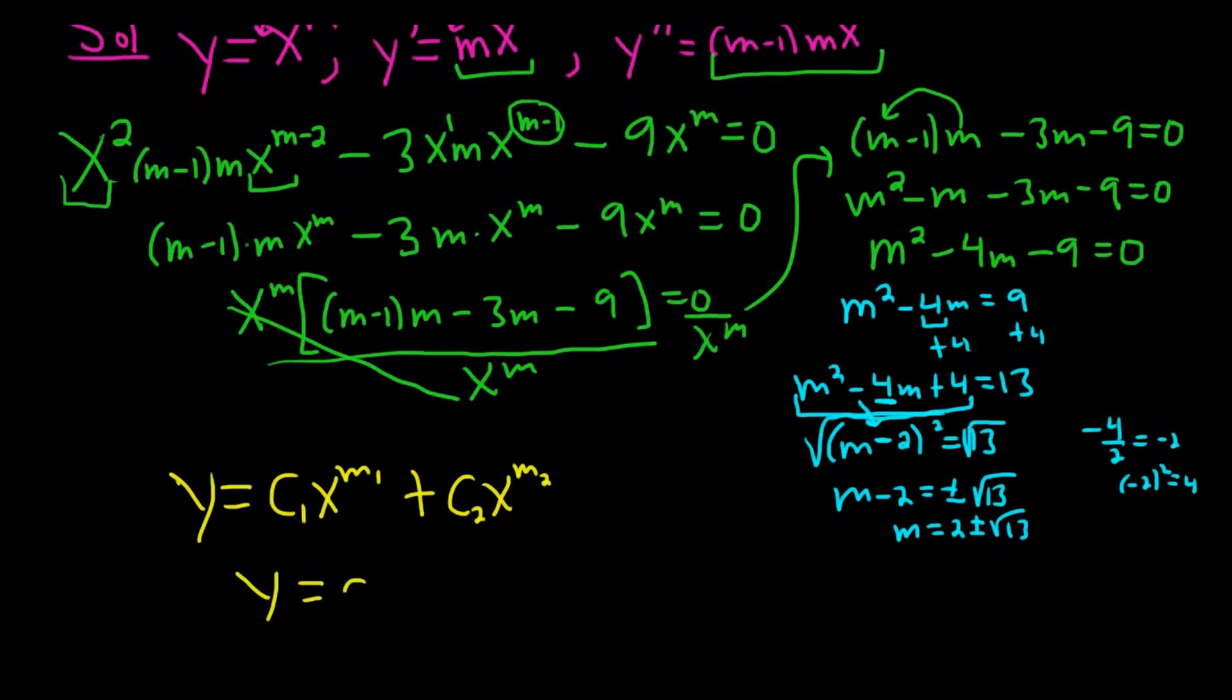So y is equal to c1, and then m1 is, I guess, 2 plus square root of 13. You could use the minus 1 as well. I'll just use the plus first. Plus c2, whoops, I forgot the x. And then x to the 2 minus square root of 13.